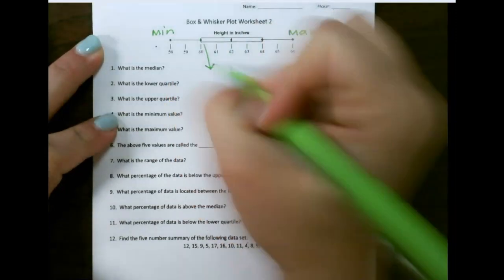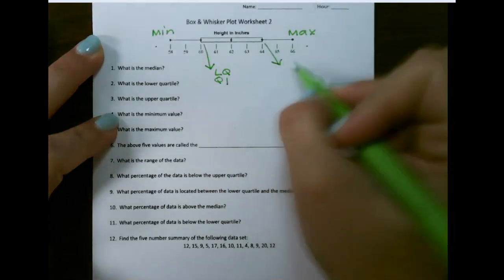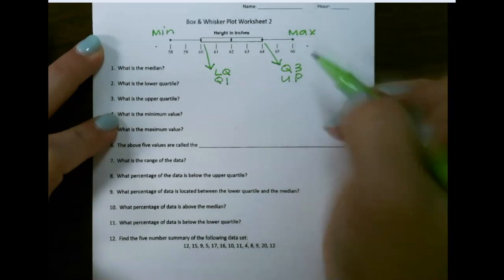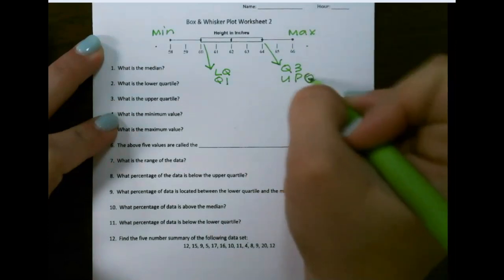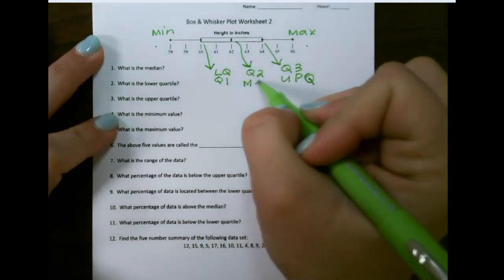This one here would be your lower quartile or quartile 1. This one would be quartile 3 or upper quartile. And this one here is your median or Q2.